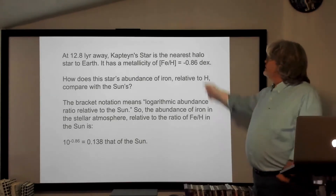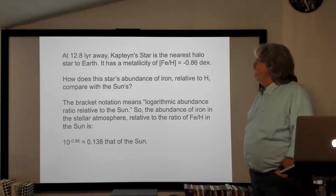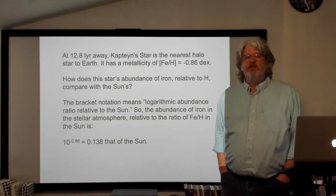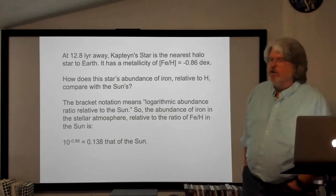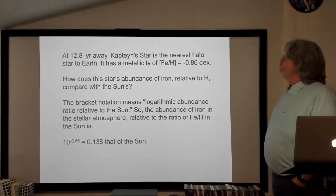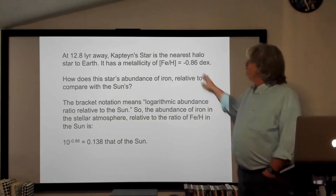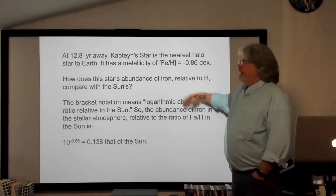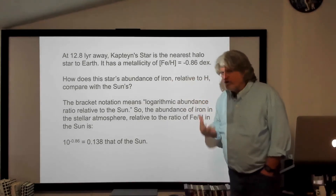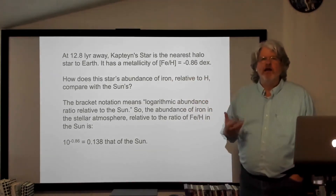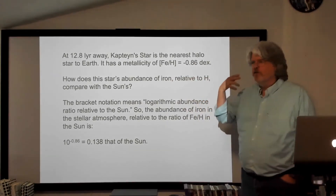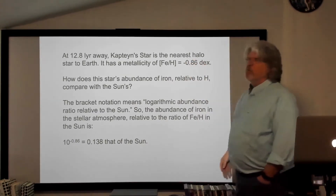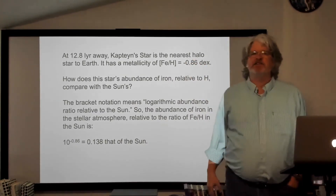Here's another example. The nearest halo star to the Earth is Kapteyn's star — it's a halo star that happens to be blowing through the disk right now, a high proper motion star. You look it up in the literature and they say it has a metallicity — and again, we're using iron as a proxy for the overall heavy element content — of minus 0.86 dex.